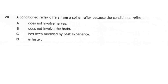Question 20. A conditioned reflex differs from a spinal reflex because the conditioned reflex: A does not involve nerves. B does not involve the brain. C has been modified by experience. D is faster. The correct answer here is C. A conditioned reflex has been modified by experience — it is learnt or achieved through training. That is how we differentiate a spinal reflex from a conditioned reflex.